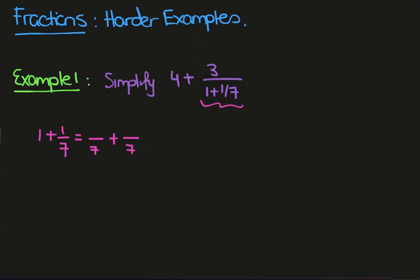And so if I multiply across I get 7 plus 1 which is 8 over 7. So now what we have is the main fraction we need to deal with is 4 plus 3 over 8 over 7.